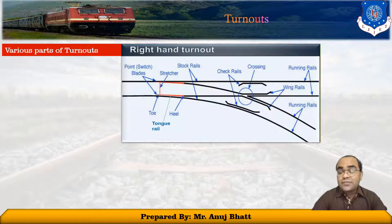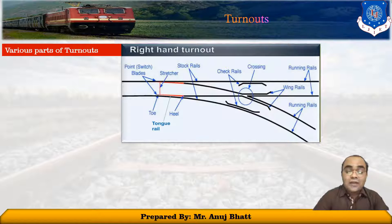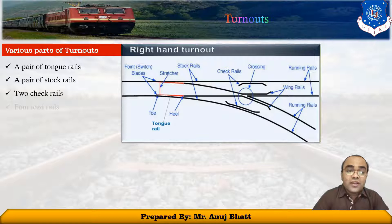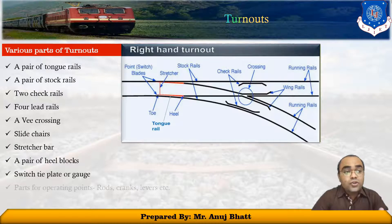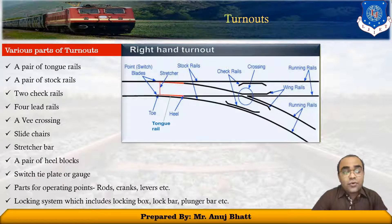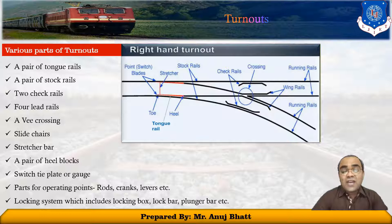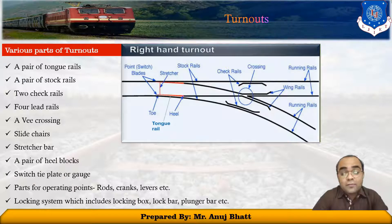There are various parts of these turnouts: a pair of tongue rails, a pair of stock rails, check rails, four lead rails, a V-crossing, slide chairs, stretcher bars, a pair of heel blocks, and a switch tie plate or gauge.